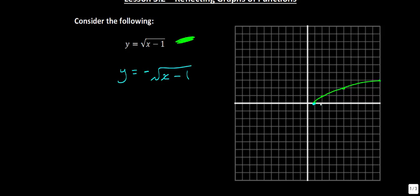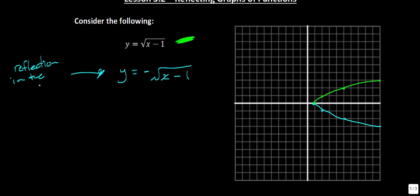But this is where things start to change. If we put in 2, you have 2 minus 1 is 1, the square root of 1 is 1, but then 1 times a negative gives me negative 1. And so you'll see that all of these points get reflected. The note to make is: when we add that negative in front, we will have a reflection in the x-axis.